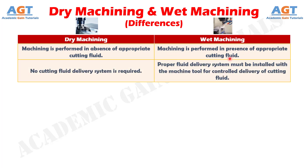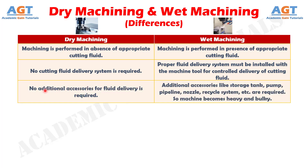Number 2: In dry machining, no cutting fluid delivery system is required, whereas in wet machining, a proper fluid delivery system must be installed with the machine tool for controlled delivery of cutting fluid. Number 3: In dry machining, no additional accessories for fluid delivery are required.